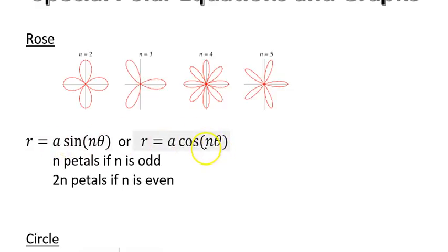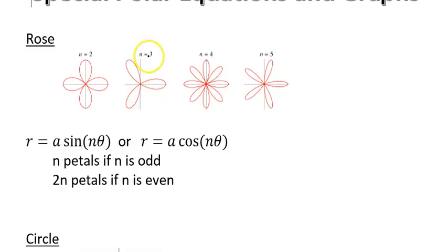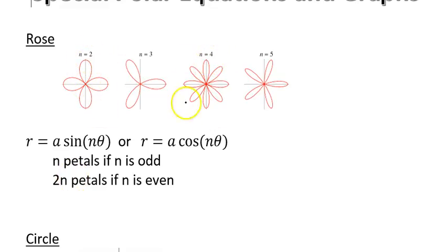The a and n are just plain numbers, but n tells us how many petals the rose will have. If n is an odd number, it will have exactly that number of petals. For example, n equals three gives three petals, n equals five gives five petals. But if n is an even number, you will have twice that many petals — when n was two we had four petals, when n was four we had eight petals.